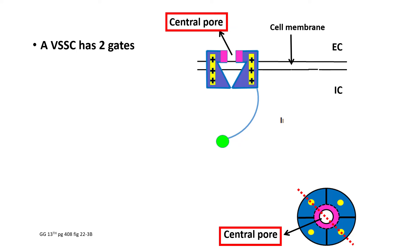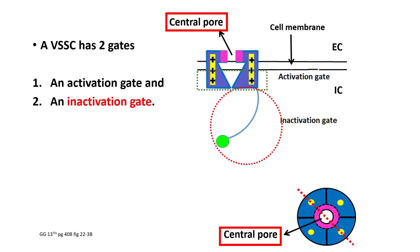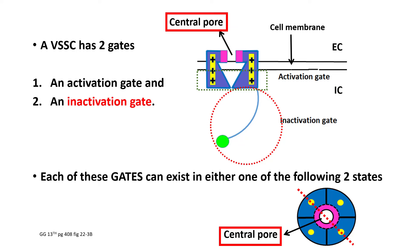This voltage-sensitive sodium channel has got two gates. The first gate is called the activation gate, and the second gate is called the inactivation gate. Each of these gates can exist in either one of two states: the open state or the closed state.